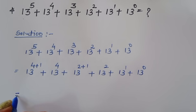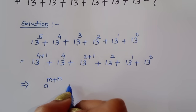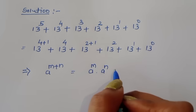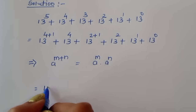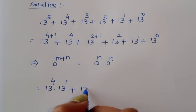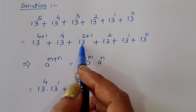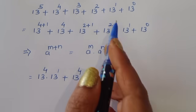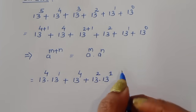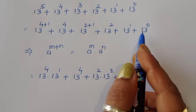Now, we know one formula: a power (m plus n) is equal to a power m times a power n. Using this formula here we will get: 13 power 4 times 13 power 1, plus 13 power 4, plus 13 power 2 times 13 power 1, plus 13 power 2, plus 13 power 1, plus 13 power 0.